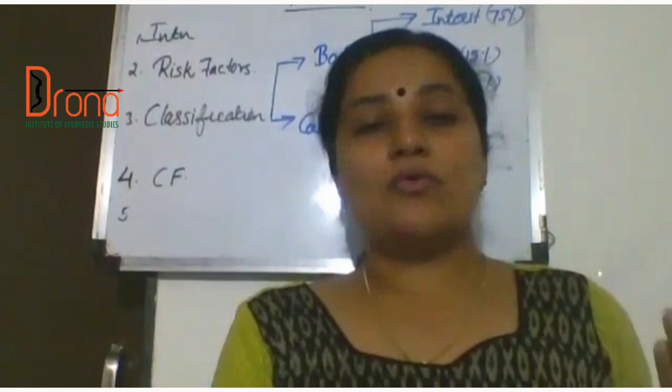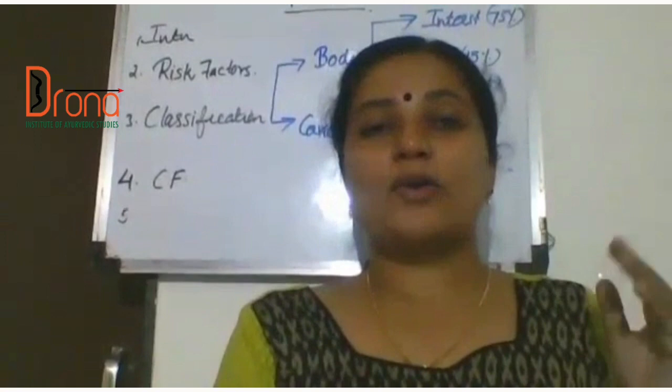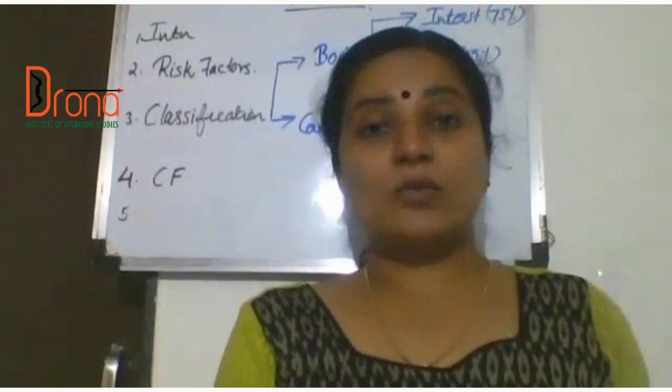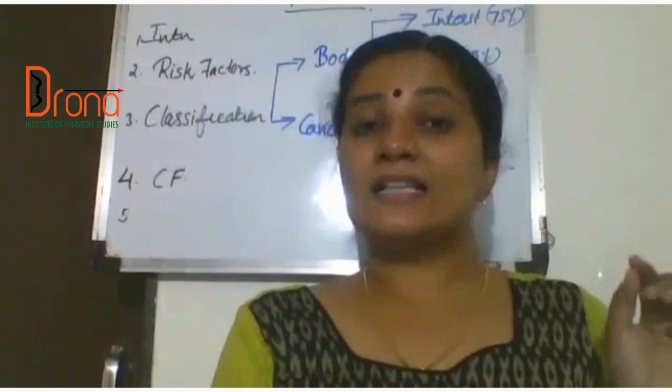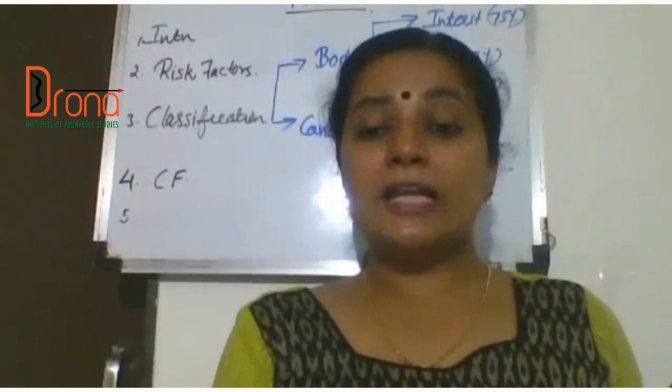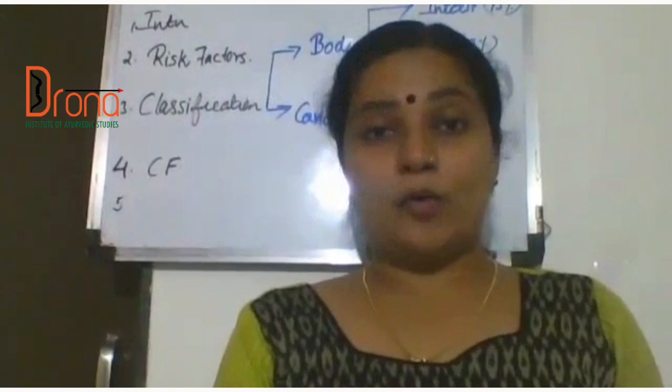Then why is it called fibroid? Since it is having fibrous tissue consistency, this is known as fibroid. Then why is this known as leiomyoma? Fibroid is also known as leiomyoma because fibroid is a smooth muscle neoplasm that mainly originates from the uterine myometrium. So it is called a leiomyoma.